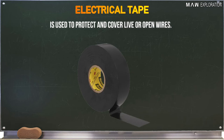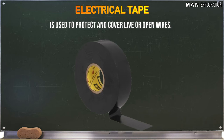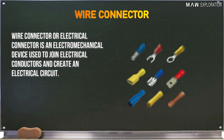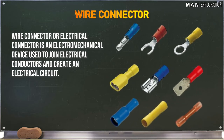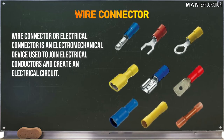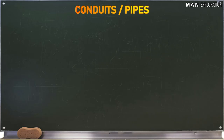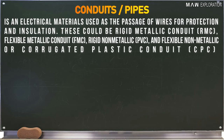Electrical tape is used to protect and cover live or open wires. Wire connector, or electrical connector, is an electromechanical device used to join electrical conductors and create an electrical circuit.